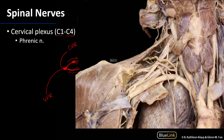We can see the phrenic nerve descending here. It has a very special relationship with the anterior scalene muscle, which has been reflected away — the phrenic nerve runs just anterior to and upon the anterior scalene muscle. The phrenic nerve then runs between the subclavian artery and the subclavian vein at the root of the neck and continues down to innervate the diaphragm. The phrenic nerve has its roots from C3, C4, and C5.